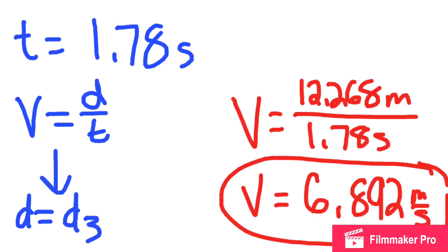Through the use of our slow-mo cams, we were able to calculate the time it took the ball to travel, which was 1.78 seconds. So through the formula velocity equals distance over time, with D equaling D3 which we calculated before — velocity equals 12.268 meters divided by 1.78 seconds — getting velocity equaling 6.892 meters per second.